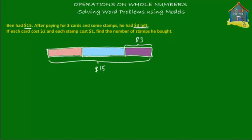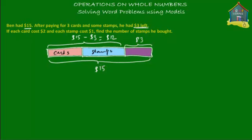This block here represents the amount of money he spent on the cards, and this block represents the amount he spent on the stamps. How much did he spend altogether on cards and stamps? He spent the pink block plus the blue block. If he had $15 at first and was left with $3, he spent $15 minus $3, which equals $12. So Ben spent a total of $12 on cards and stamps.